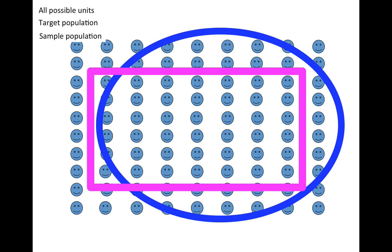Note that the sample population is not necessarily a subset of the target population. You see that this pink rectangle goes a little bit outside the blue circle, and that can happen in some cases.